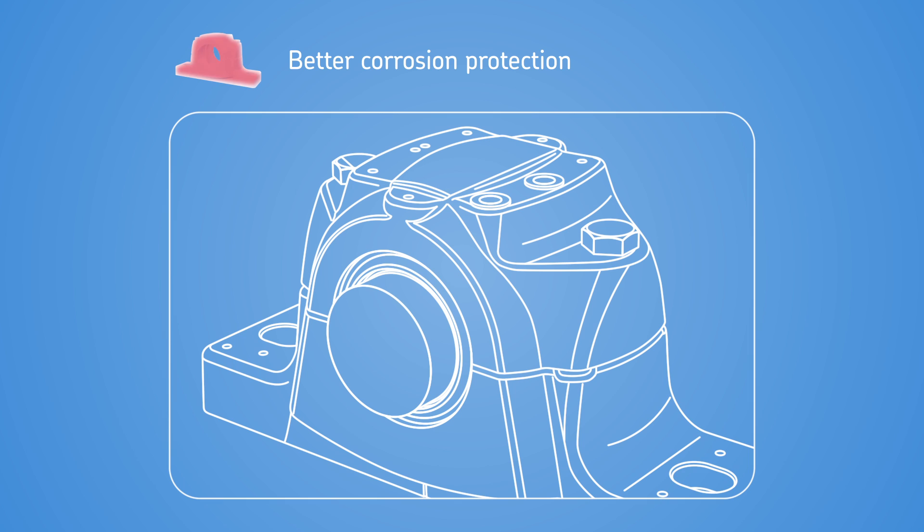SE housings are painted graphite gray using a water-based paint that protects them in accordance with corrosivity category C3. Unpainted surfaces are protected by a solventless rust inhibitor.